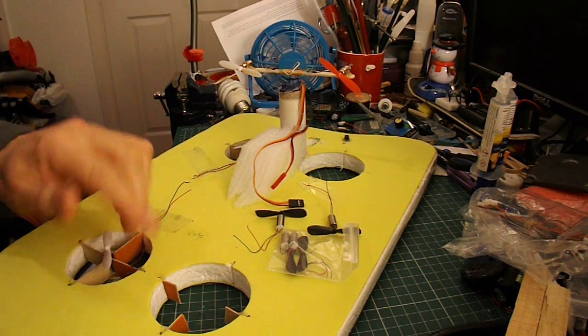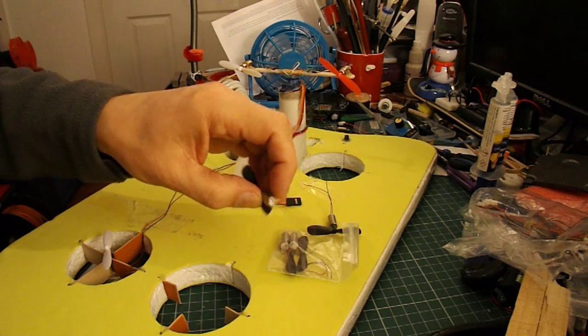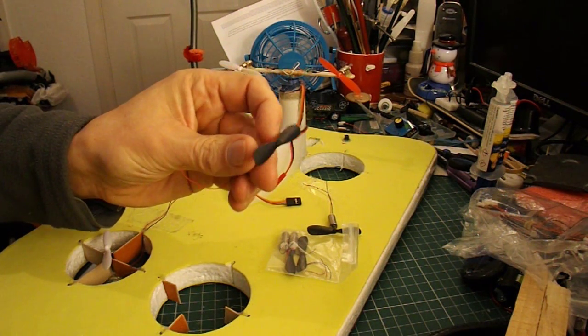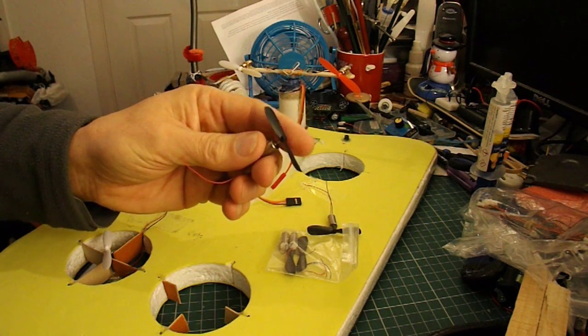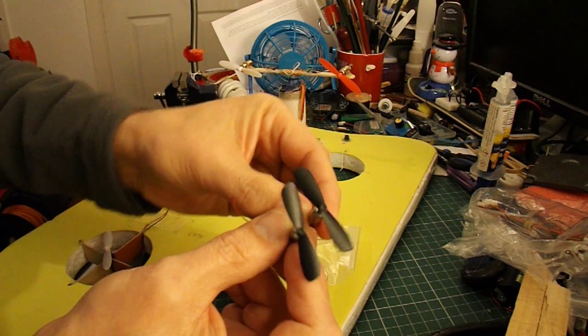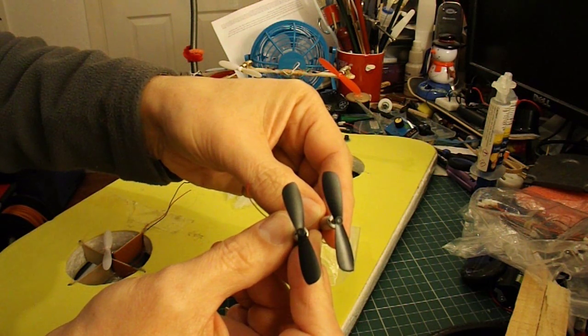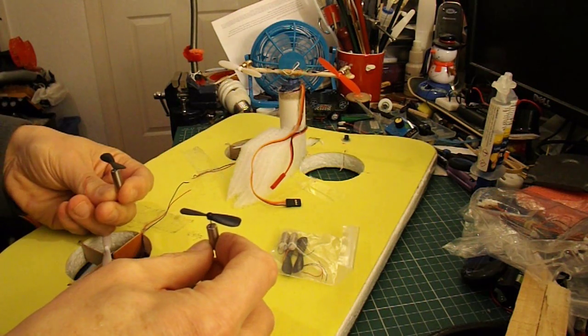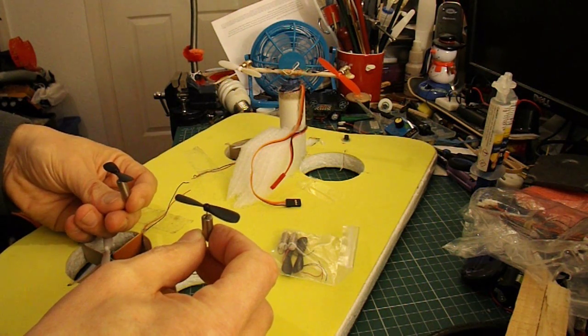So what I'm going to do is replace all 4 of them with 4 new motors that I've got. These ones actually come with propellers, and they're matched pairs, so we've got left and right handed propellers. So we can put them either side, so we get a balanced thrust.